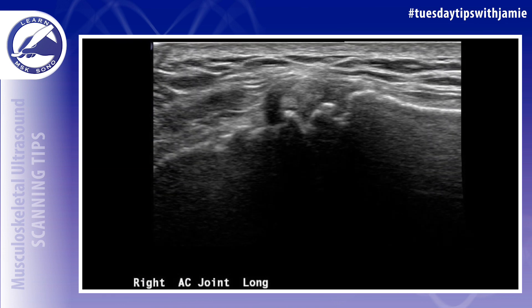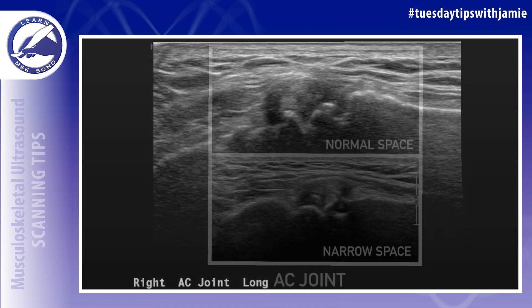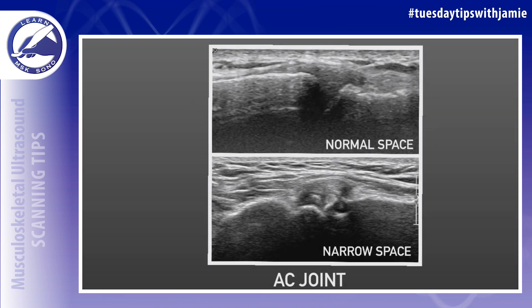When arthritis is present, the space between the ends of the bones narrows or disappears as the condition progresses. This causes there to be bone on bone opposition within the joint. It can be very painful for the patient when the bones rub together.